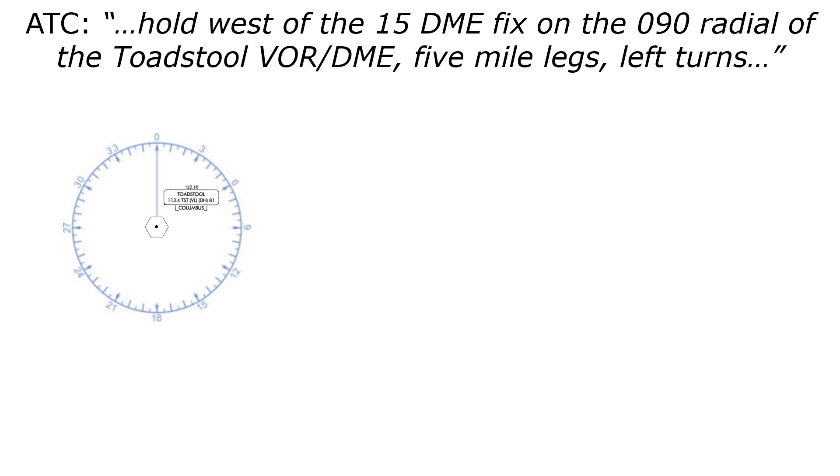Right away, let's notice the disagreement between the instruction to hold west and the 0-9-0 radial, which is east. This can sometimes, but not always, be the case when we're holding on a point off of the NAV aid. Not to worry, we're going to build the hold the same way we did before. We'll start with the inbound leg, it's on the 0-9-0 radial, which is here. And it ends at the 1-5 DME here.